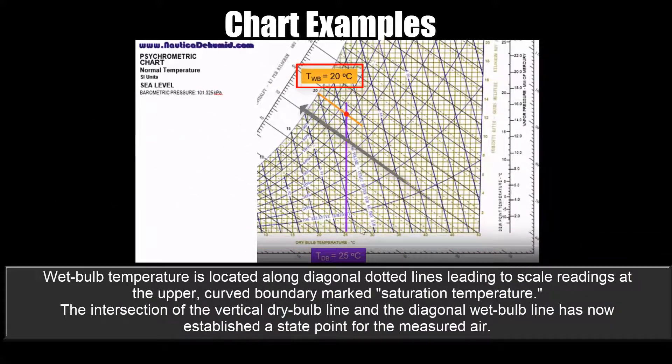Wet bulb temperature is located along diagonal dotted lines leading to scale readings at the upper curved boundary marked saturation temperature. The intersection of the vertical dry bulb line and the diagonal wet bulb line has now established a state point for the measured air.